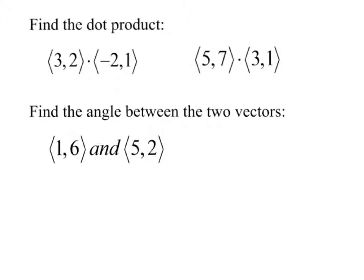First of all, finding the dot product. Remember, the dot product gets us down to one number. So, the dot product for this first one, we do 3 multiplied by negative 2 plus 2 multiplied by 1. So, negative 6 plus 2 is negative 4. That's our dot product.